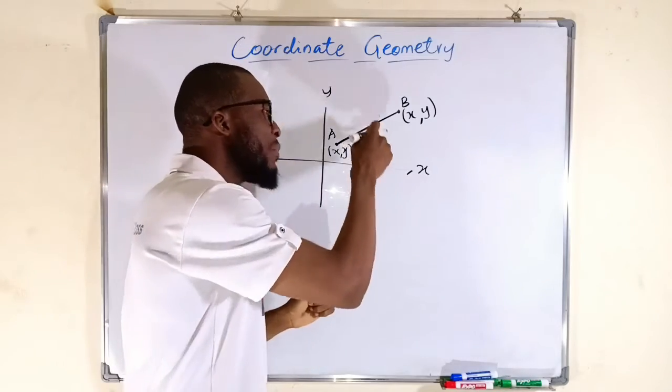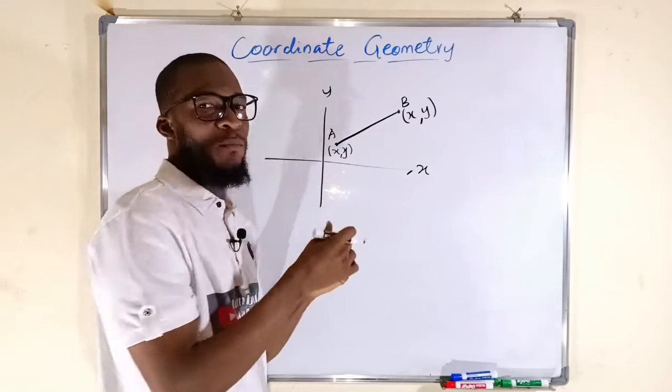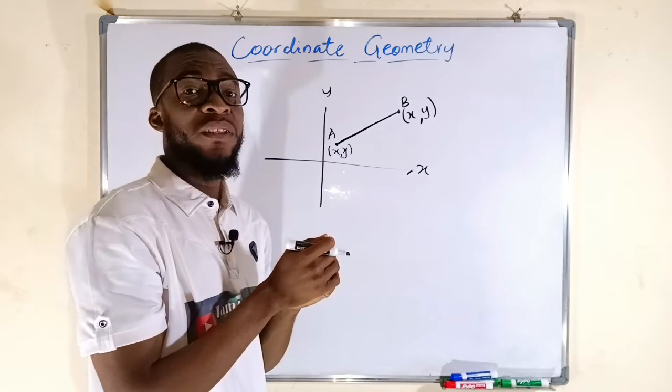We can calculate the midpoint, that is the point halfway between A to B. We can calculate the slope.